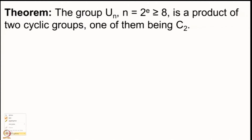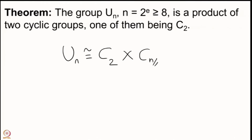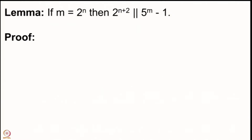What we are going to show is that U(n) is isomorphic to C₂ × C(n/4). Since n is a power of 2, φ(n) = n/2, which is the same as 2 × (n/4), and n ≥ 8 so n/4 is an integer. We will need one small lemma here: if m is a power of 2, say 2^n, then 2^(n+2) exactly divides 5^m − 1.